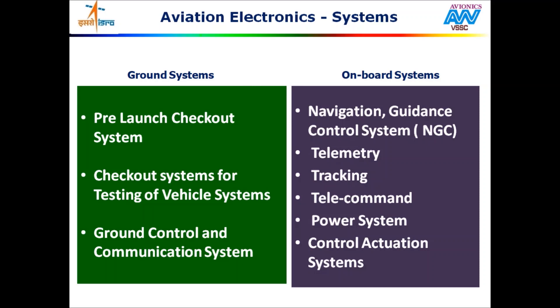Now let us see about onboard systems. The important ones are: the navigation guidance and control system; telemetry systems, which provide functional parameters of a rocket before and after launch to the ground system; telecommand system, which is used to provide commands to destruct the rocket from the ground; power system, to power all the above systems; and control actuation system, which is responsible for the steering of the rocket.